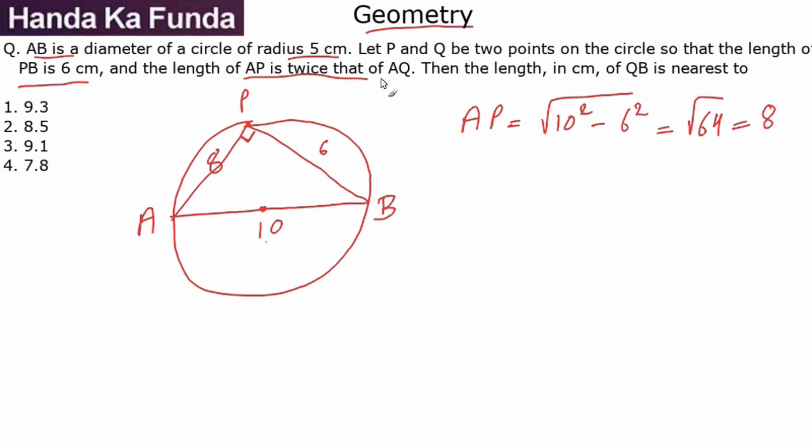Now we are given AP is twice that of AQ. So if I draw AQ, AQ will be 4. Now once again, AQB is going to be a right angle triangle because the diameter will form a right angle triangle with a point on the circumference.